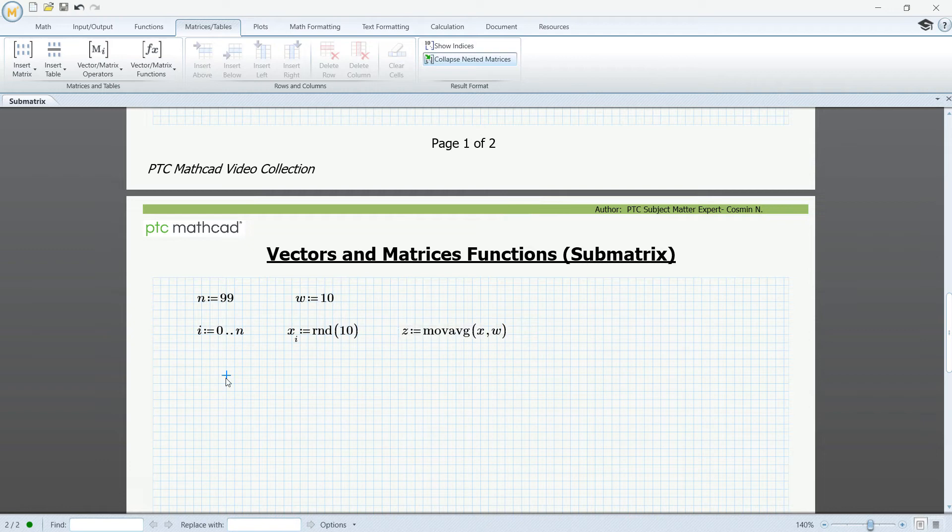To replicate this, I will create another range variable called j that goes from 0 to n minus w, and below I'm going to create my version of the moving average function and I'm going to call it y.